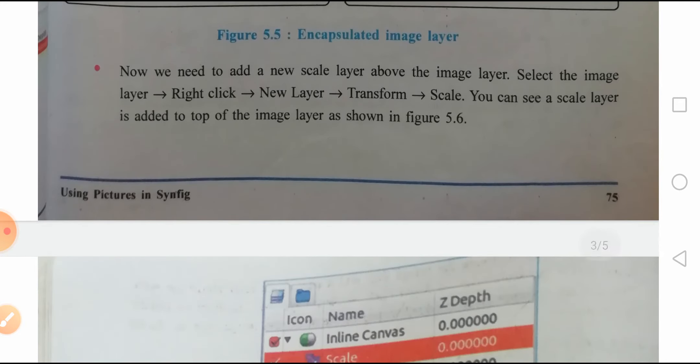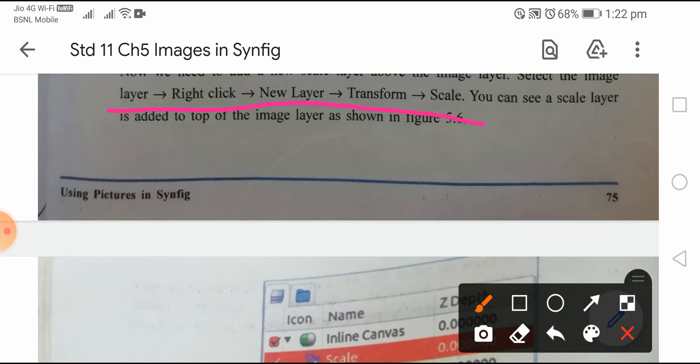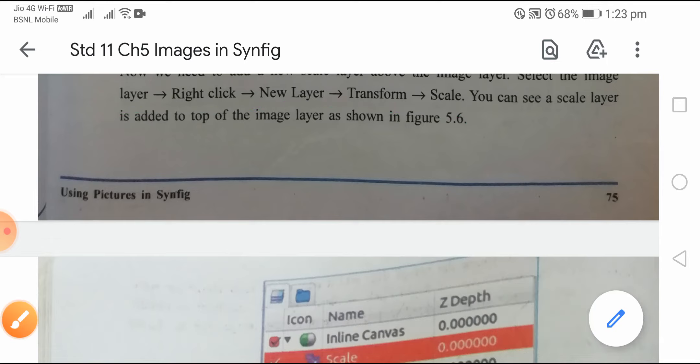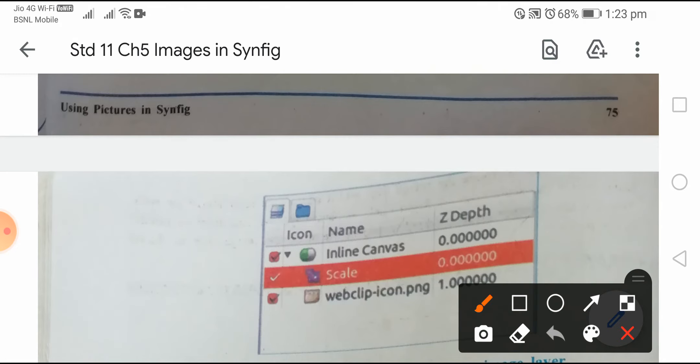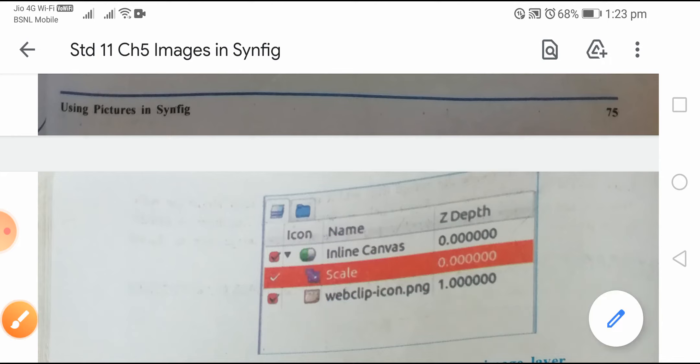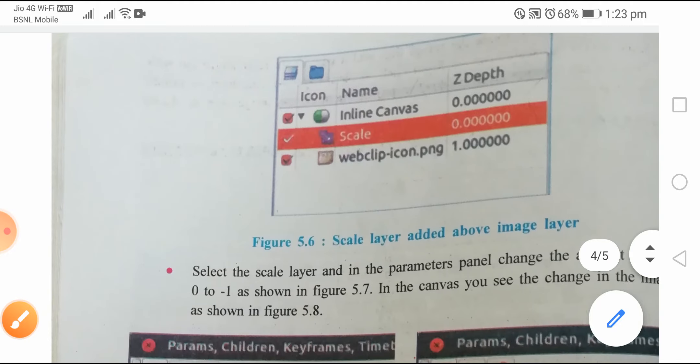Now we need to add a new scale layer above the image layer. Select the image layer, right click, then New Layer, Transform, and Scale. You can see the scale layer is added to the top of the image layer. Now there's an inline canvas with a scale layer between them.